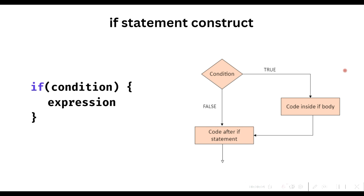To write more sophisticated programs with R, you will need to control the flow and order of execution in your code. One fundamental way to do this is to make certain sections of code dependent on a condition. If the condition is true, a certain segment of code gets executed, and if the condition is false, another section of code gets executed. In R there are different conditional structures such as the if-else statement and switch statement. In this video we will look at the if-else conditional statement.